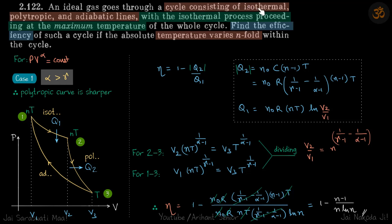A cycle consists of isothermal, polytropic, and adiabatic lines, with the isothermal process proceeding at maximum temperature. Find the efficiency if the temperature varies n-fold. This is how the curve will look. Since isothermal proceeds at maximum temperature, this line is the isothermal line. Then we have two more lines, both curves — one adiabatic and one polytropic.